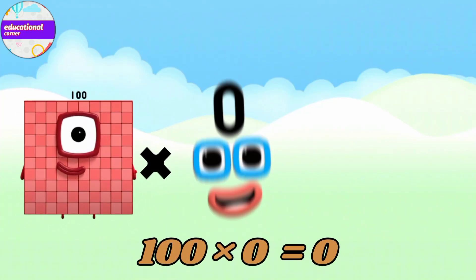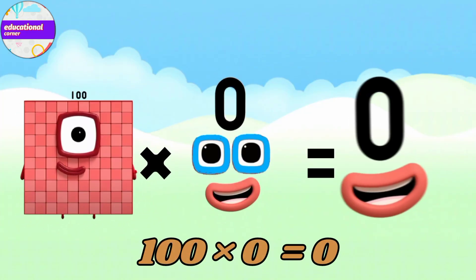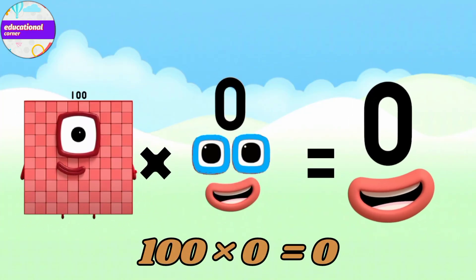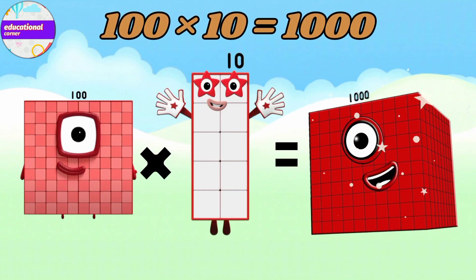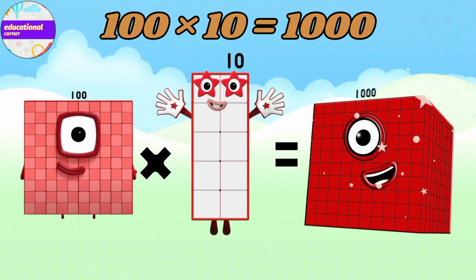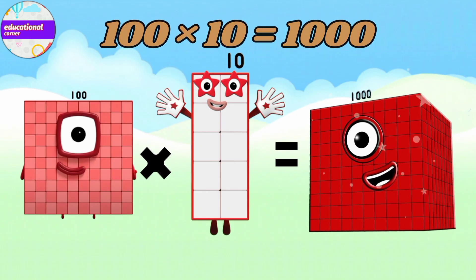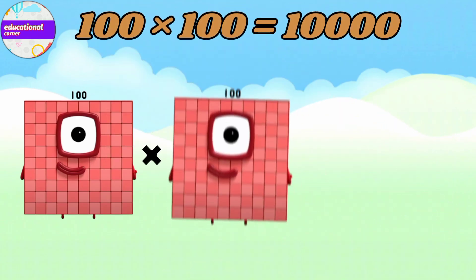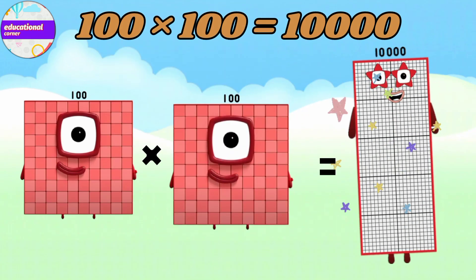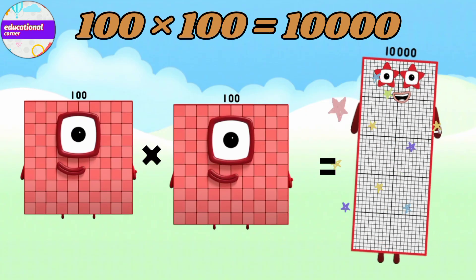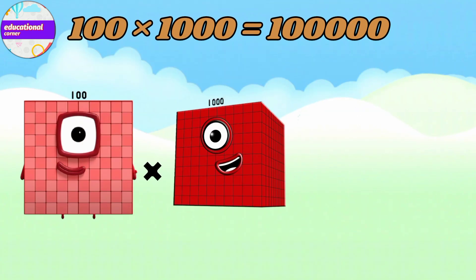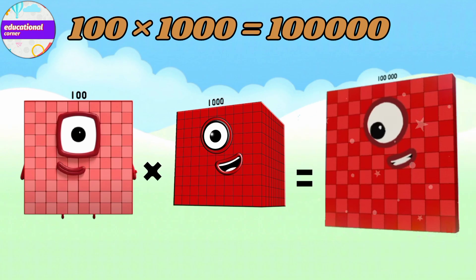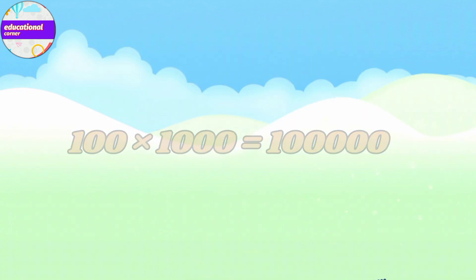100 x 0 equals 0. 100 x 10 equals 1000. 100 x 100 equals 10,000. 100 x 1000 equals 100,000.